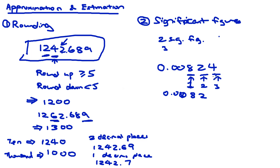Just like rounding, if the next digit is greater than or equal to 5, you add 1. So if the number were 0.0826 and asked to round to two significant figures, the answer would be 0.083, because the third significant figure, 6, is greater than or equal to 5.